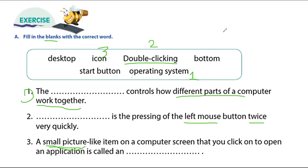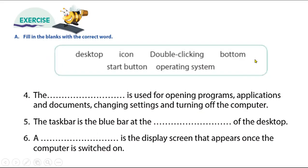Icons are the small pictures we use to open a program. We have three more questions. Question four: the blank is used for opening programs, applications, documents, changing settings, and turning off the computer. How can we turn off the computer? What function do we need? We need the start button.